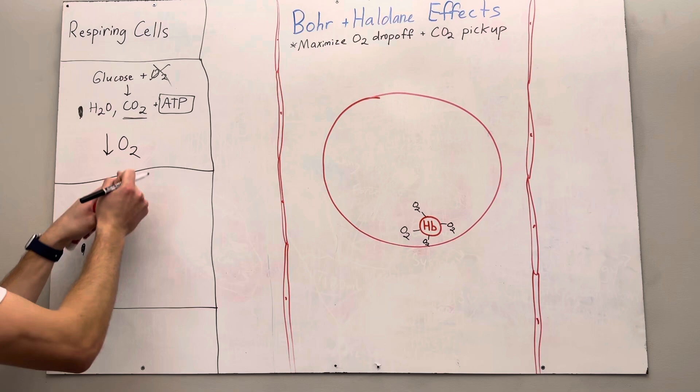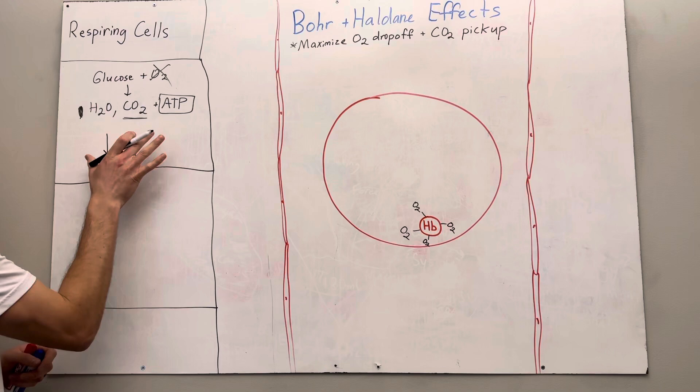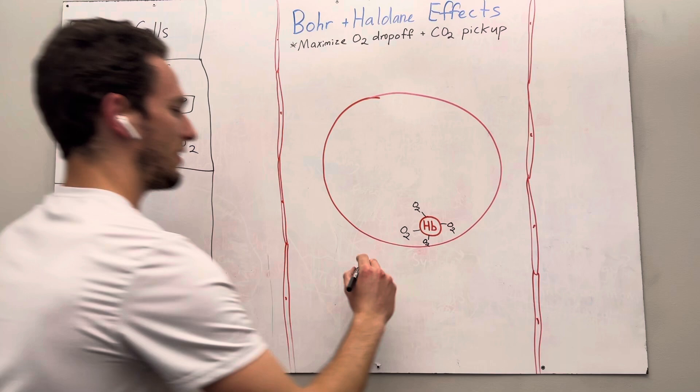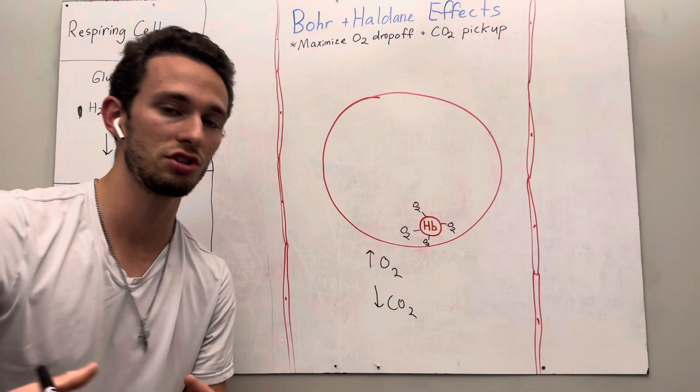This is going to come into effect when we're talking about the Bohr and Haldane effect. So watch this. First off, we've got low oxygen in the cells, and we've also got a lot of carbon dioxide in the cells, in these tissue cells. In the bloodstream, both in the blood cell and the plasma, so the fluid surrounding the blood cells, we're going to have high amounts of oxygen, and we're going to have low amounts of carbon dioxide when we are delivering oxygen to the tissue. So as you see already, we've got this gradient.